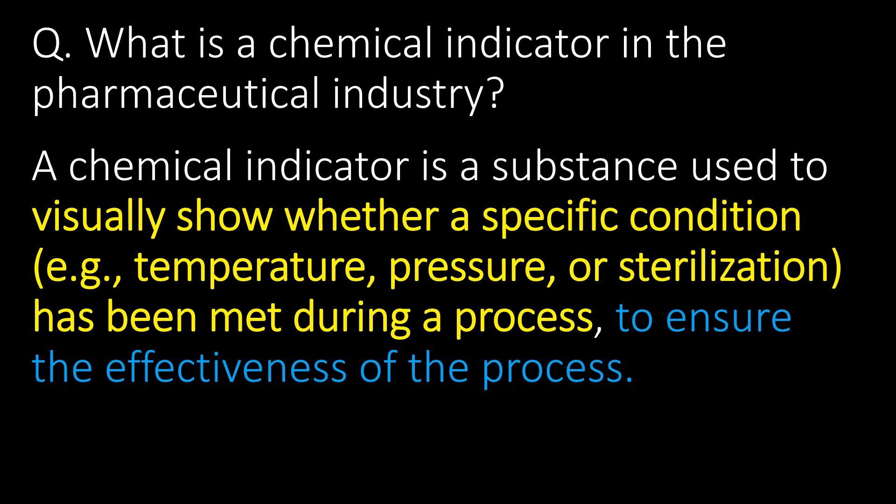Welcome. We will start with some basic questions and then go in detail. First question: what is a chemical indicator in the pharmaceutical industry? A chemical indicator is a substance used to visually show whether a specific condition, e.g. temperature, pressure, or sterilization, has been met during a process to ensure effectiveness of the process.